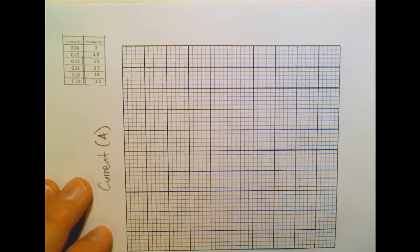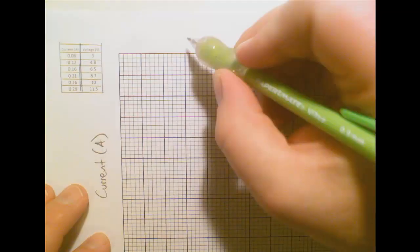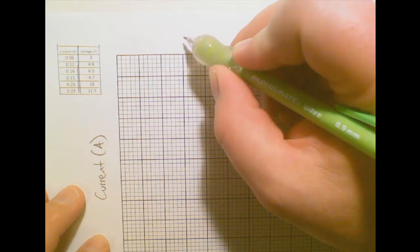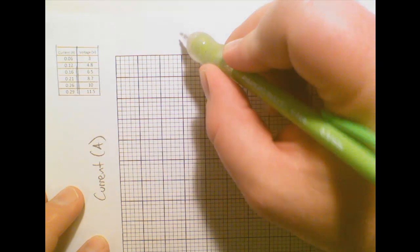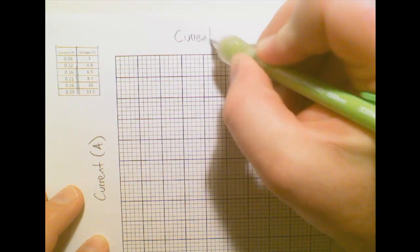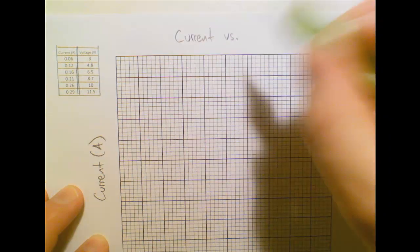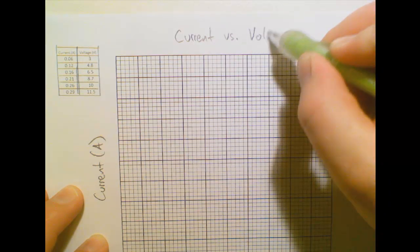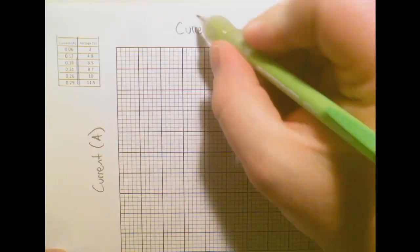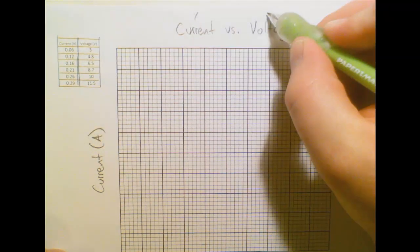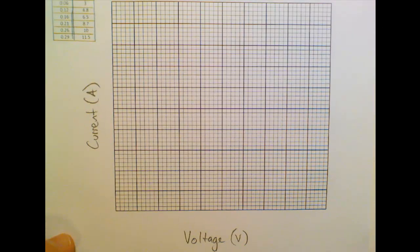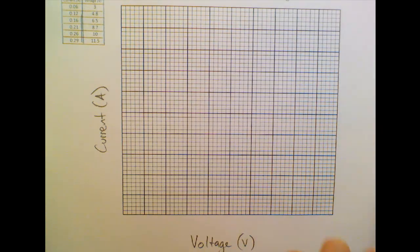And what I'll do is just to remind myself of another rule with graphs. If I tell you to plot something versus something, then that means y versus x. So I'll write up here that the title of the graph is current versus voltage. And that would be what is on the y-axis and what is on the x-axis.